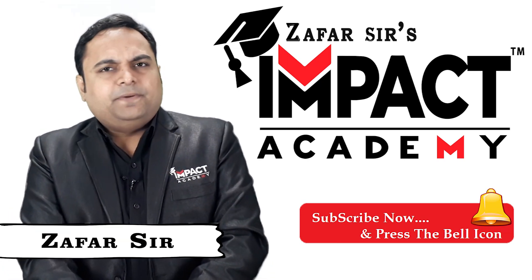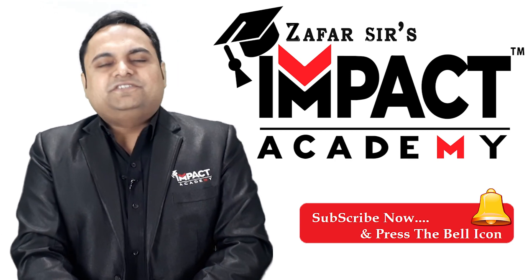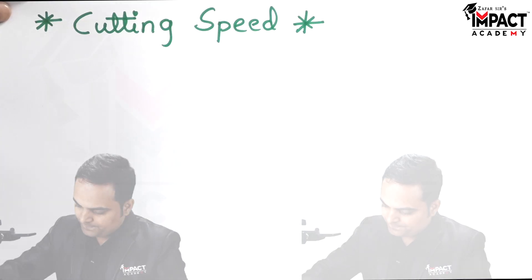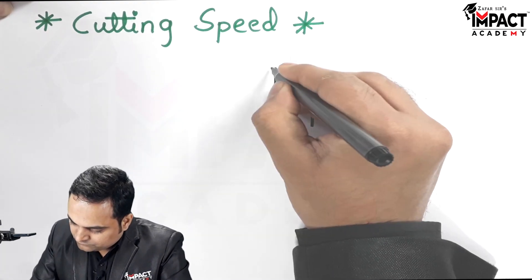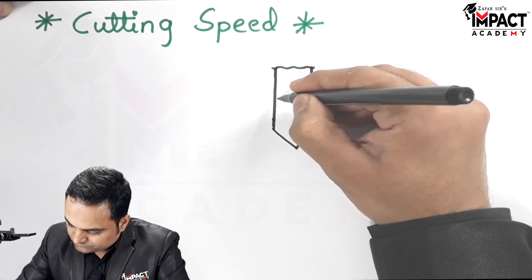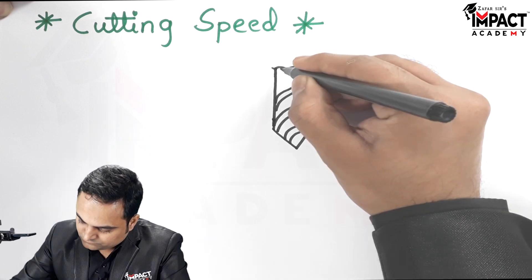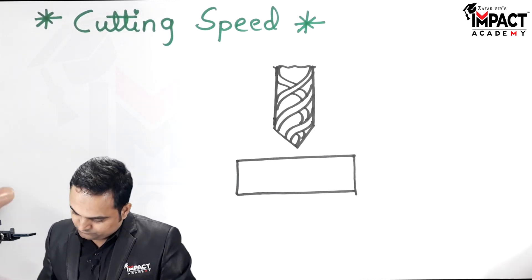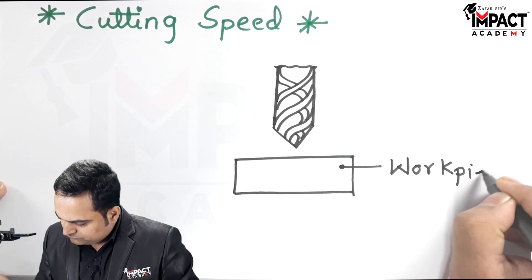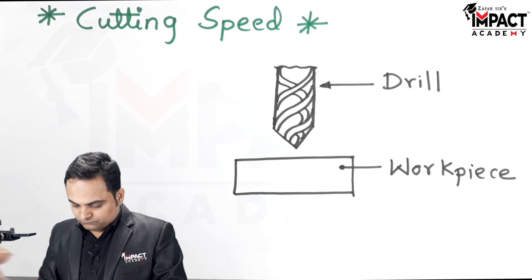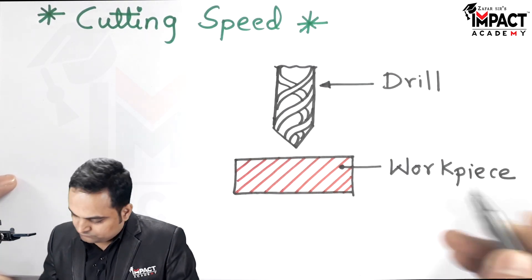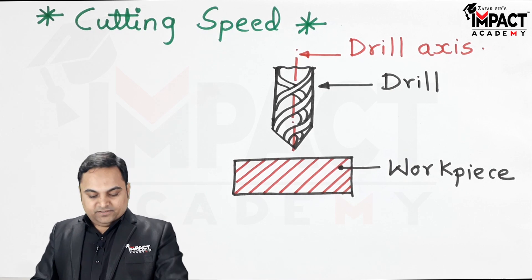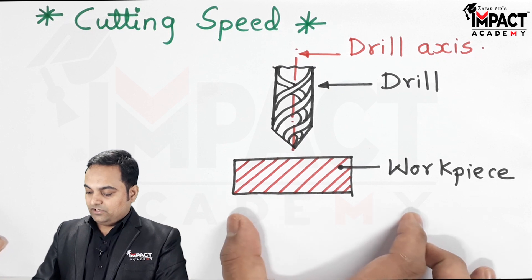Hi friends, in this video I'll be explaining the cutting parameter — that is, cutting speed — for a drilling machine. So let's get started. I'll just draw a rough diagram of a drill. Here I have drawn a rough diagram of the drill, so here we have a drill and a workpiece.